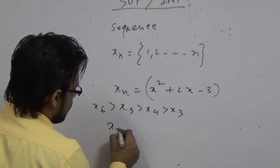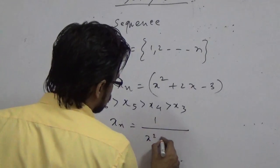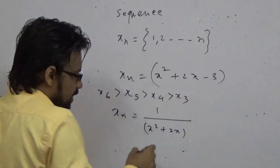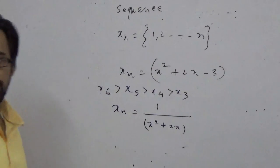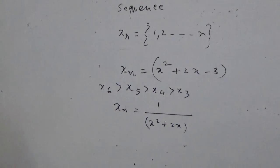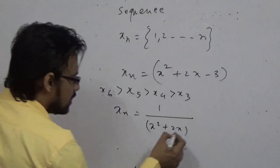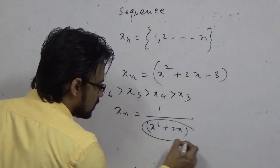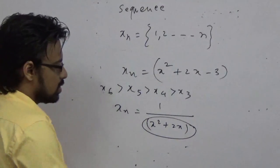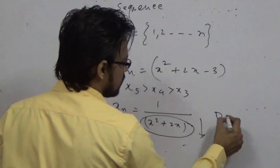But if x_n equals 1 divided by (x squared plus 2x), is this an increasing pattern? Here the values in the denominator are increasing, so ultimately this is falling — so this is a decreasing sequence.